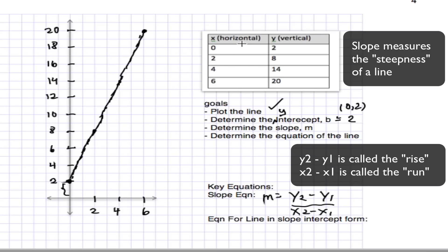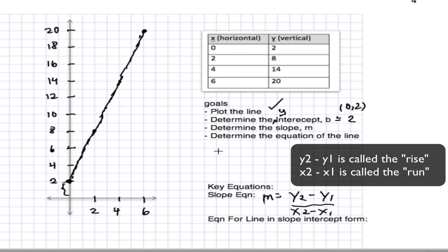So a classic mistake people make is that they take the horizontal over the vertical. But the equation is vertical over horizontal. So in this particular line, I'll pick these two points, for example.